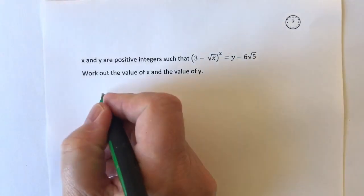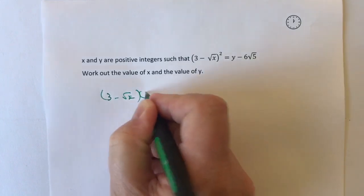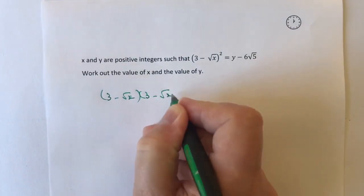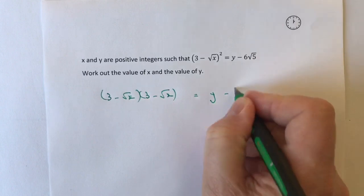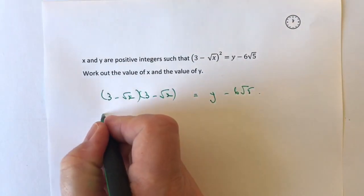So I've got (3 - √x) multiplied by (3 - √x). And don't forget that's going to equal y - 6√5. Let's have a look at the left hand side first. So 3 times 3 is going to be 9.